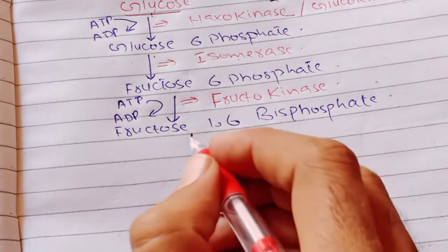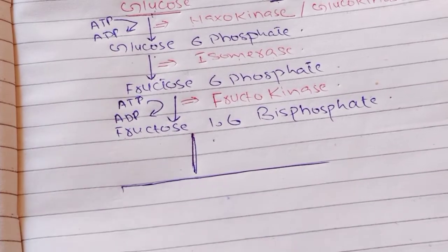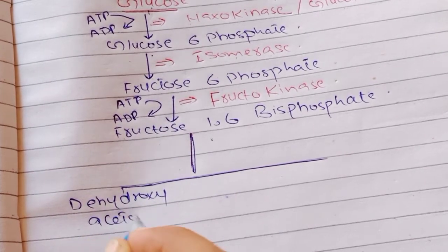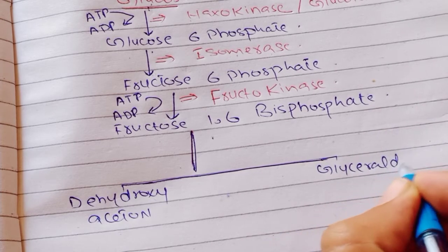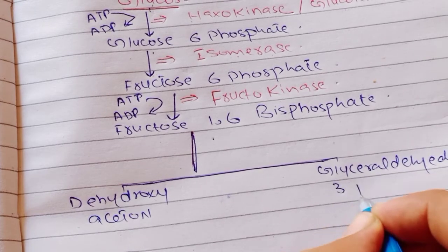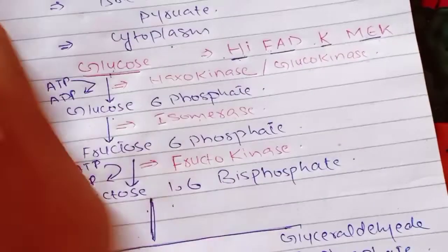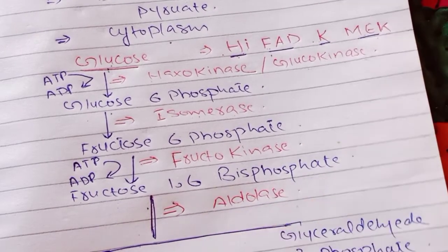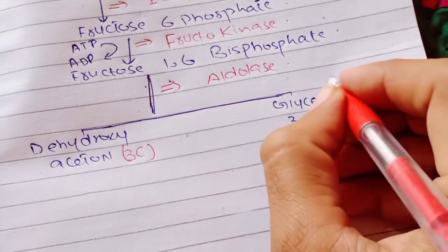Fructose-1,6-bisphosphate will be converted into two main products: the first one is dihydroxyacetone phosphate, and the next one is glyceraldehyde-3-phosphate. This step is catalyzed by the enzyme starting with A — that means Aldolase. Both dihydroxyacetone phosphate and glyceraldehyde-3-phosphate are 3-carbon compounds.